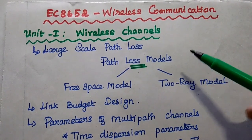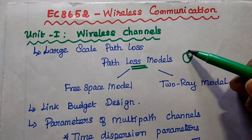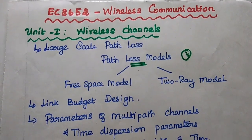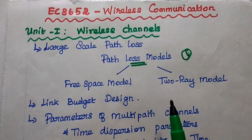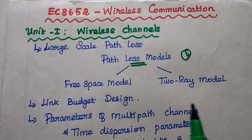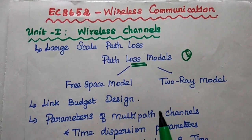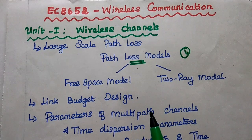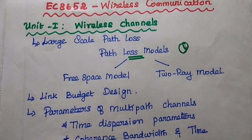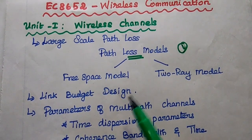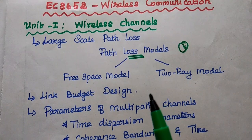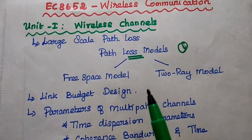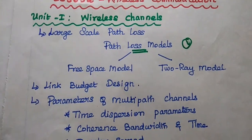The first topic is path loss models, which has two types: the free space model and the two ray model. In these path loss models, we analyze the received signal strength and the path loss. Both models are very important, and we can expect any one of them in the exam.